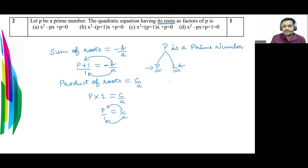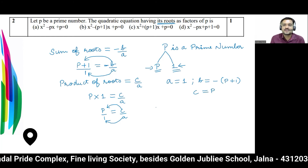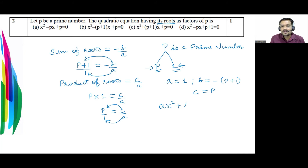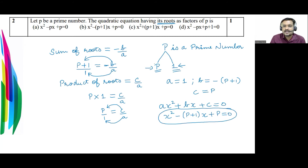The product of roots = p × 1 = p = c/a. So a = 1, b = −(p+1), and c = p. Using the general form ax² + bx + c = 0, substituting the values gives: x² − (p+1)x + p = 0. This is the quadratic equation with roots p and 1.